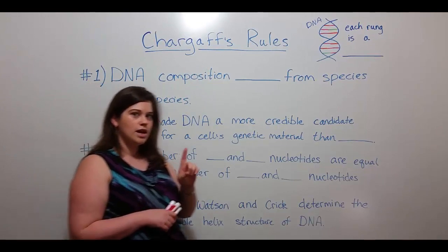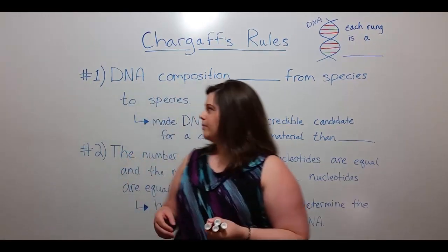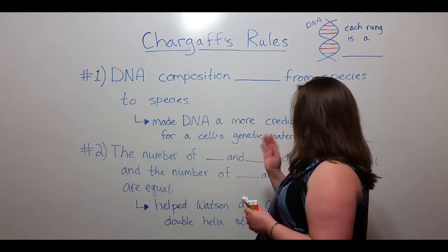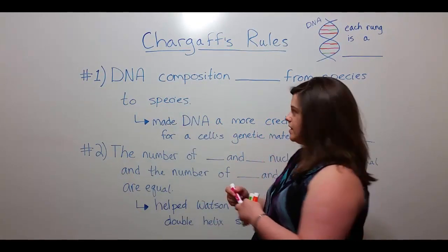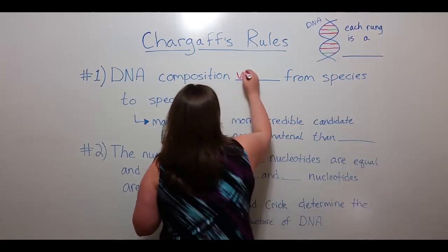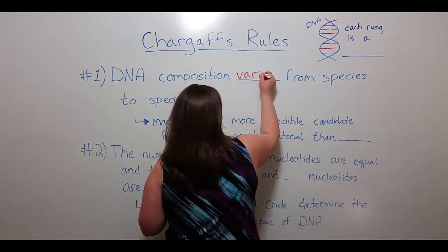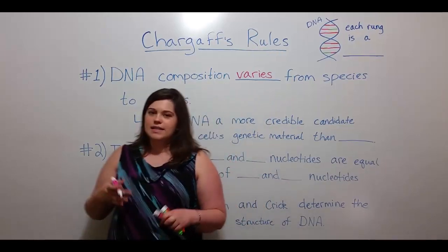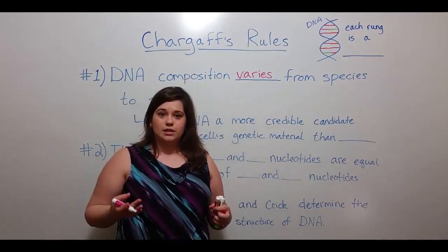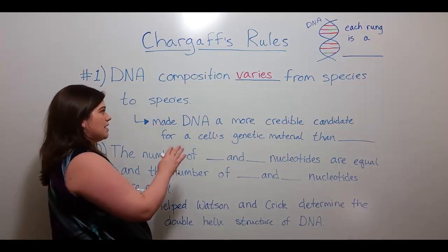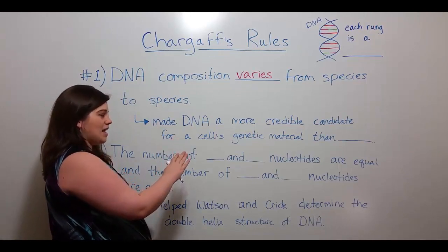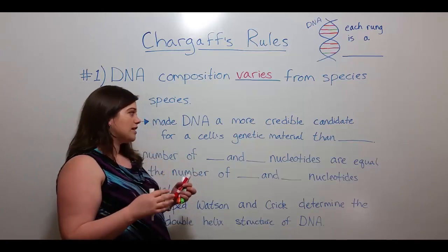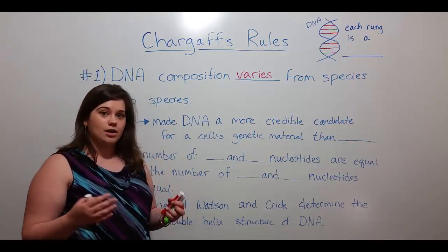Let's talk first about rule number one. Chargaff found that the DNA composition varies from species to species. This is important because it indicated that DNA was a more credible candidate for the cell's genetic material than protein.